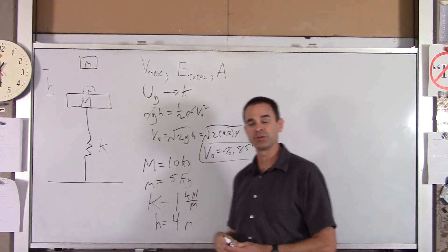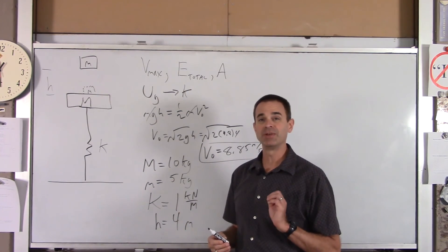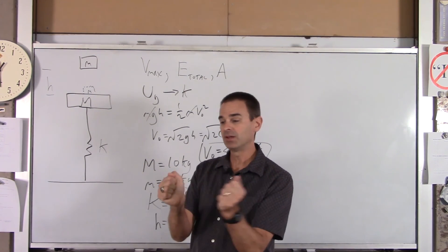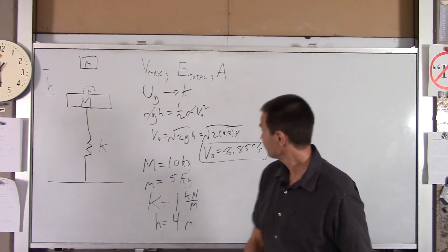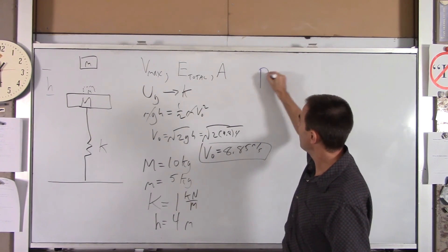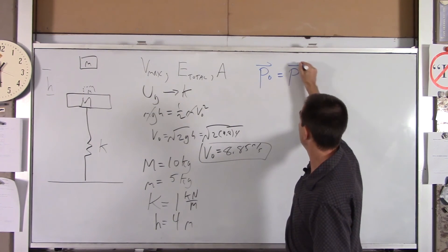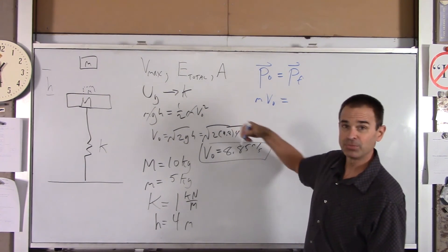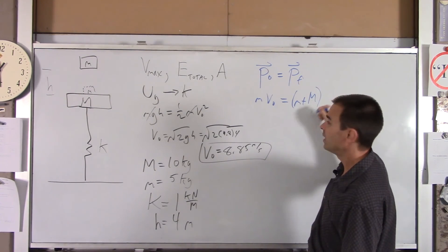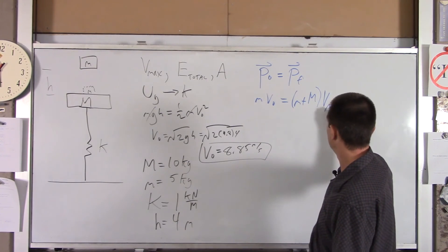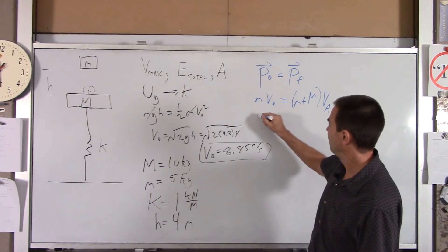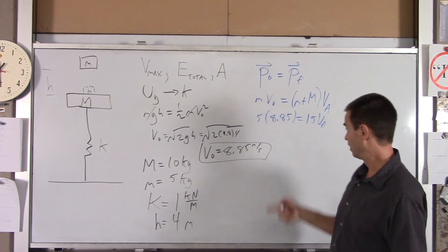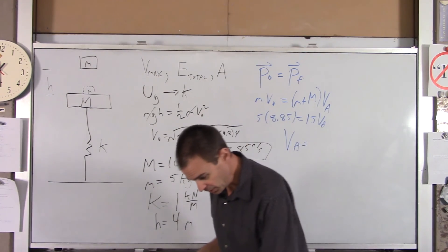Now for the velocity of the two blocks immediately after impact, we use conservation of momentum since two objects are interacting. Momentum before equals momentum after: little m times V-naught equals (little m plus big M) times V-a. So 5 times 8.85 equals 15 times V-a. V-a is just one-third of that, giving V-a equals 2.95 meters per second.